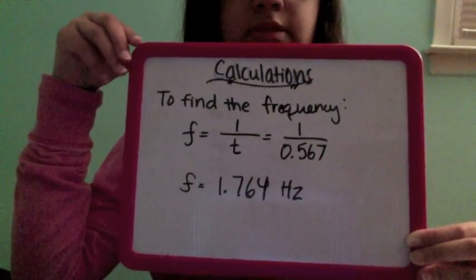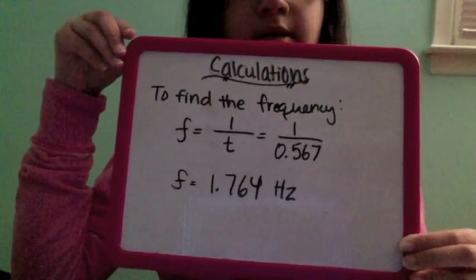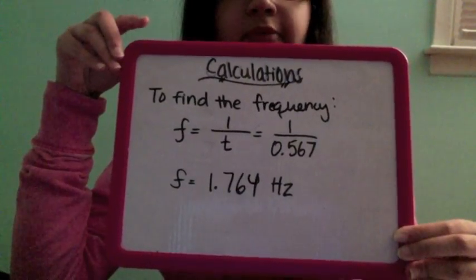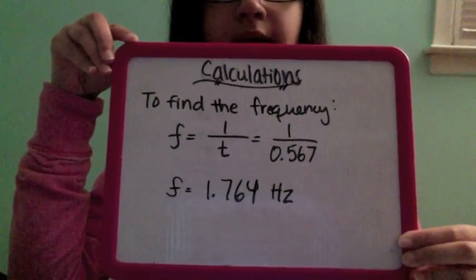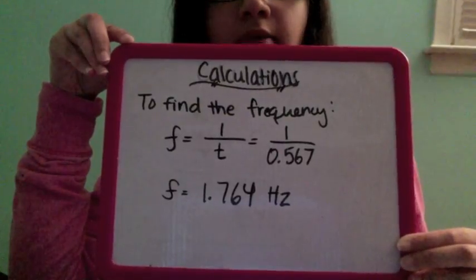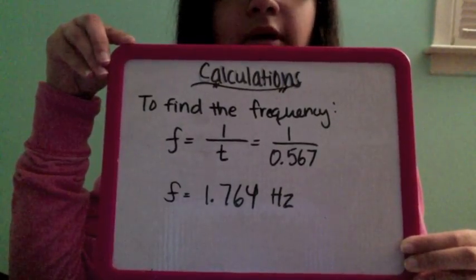To find the frequency, we knew that the formula was 1 over t. In the previous step, we found that t was 0.567, so 1 divided by 0.567 gave us 1.764 Hz.